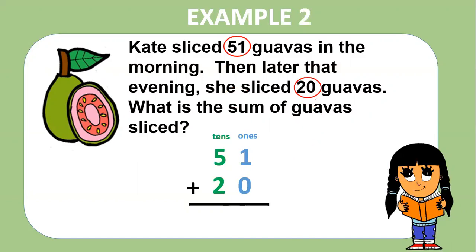We will circle 51 and 20. One plus zero equals one. Five plus two equals seven. So the sum is 71.